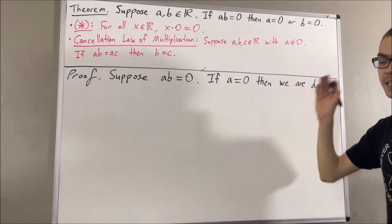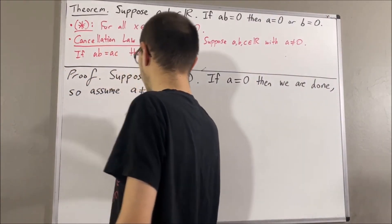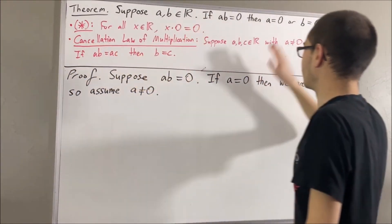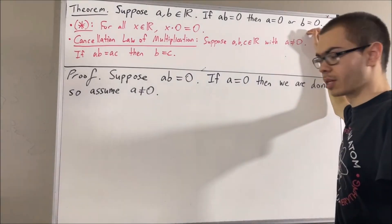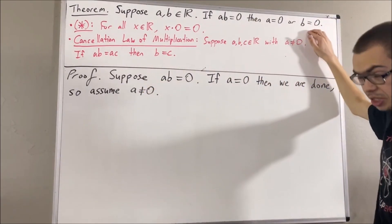So now, let's consider the case that A is not equal to 0. Again, we want to show that at least one of these is true. Now, in this case, it makes sense to show that B is equal to 0.